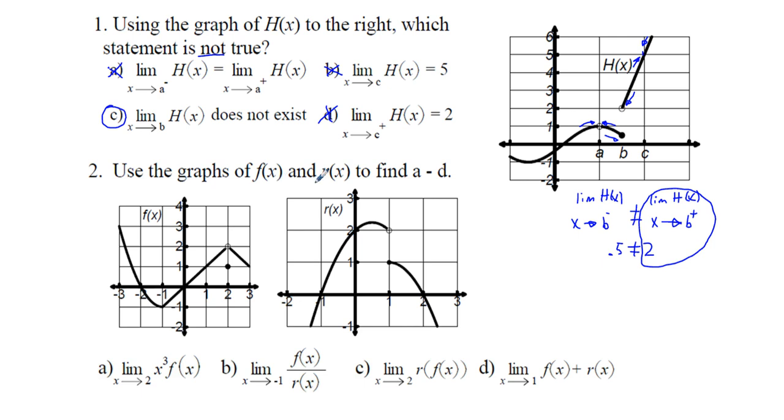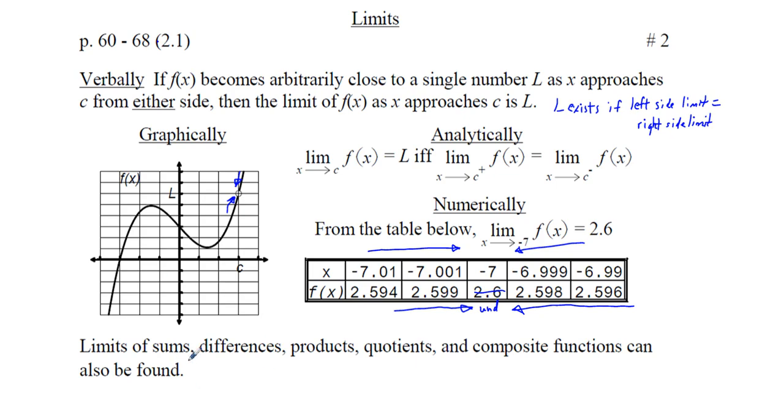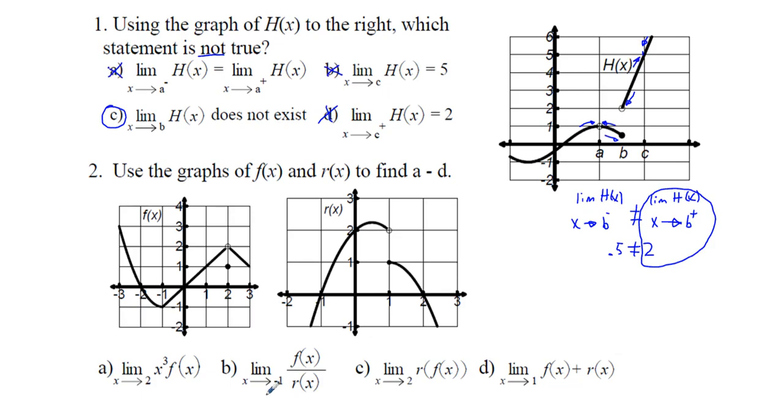Number two: use the graphs of f of x and r of x to find a through d. So this is not a multiple choice. It's separate problems. We have the limit as x approaches 2 of x cubed times f of x is what? Well, we look up here. We say limits of sums, differences, products, quotients, and composite functions can also be found. And that's what we're going to be doing in this set here.